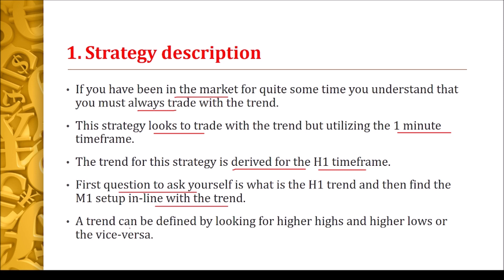A trend can be defined by looking for higher highs and higher lows, or the vice versa. We need to see either higher highs and higher lows for an uptrend, or lower lows and lower highs for a downtrend. First determine if we are in an upward or downward market context, then find entries playing within the rallies between the highs and lows.